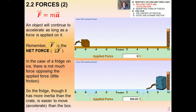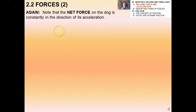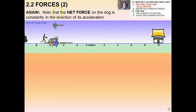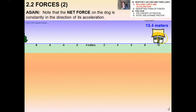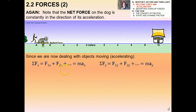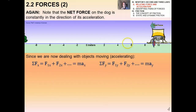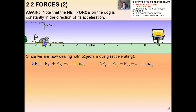In the case of pushing a dog, the net force is constantly in the direction of its acceleration, and as long as there's a total force the dog is accelerating. Now, since we're dealing with moving objects, we set the horizontal force components equal to m·ax and the vertical components equal to m·ay, because acceleration has components in both directions.